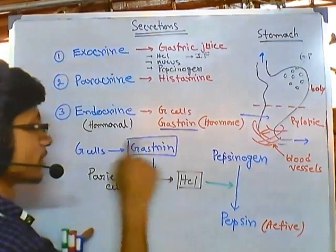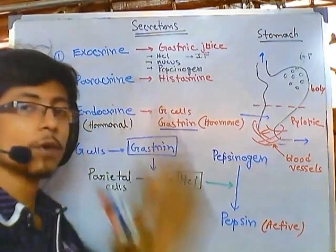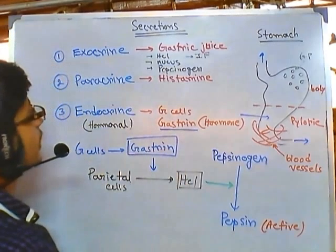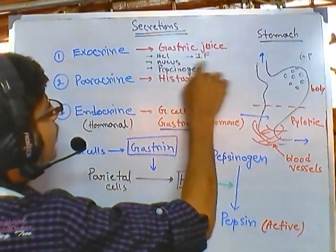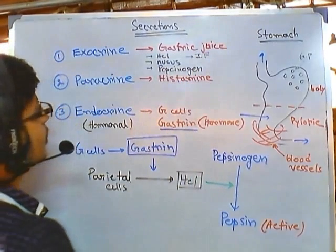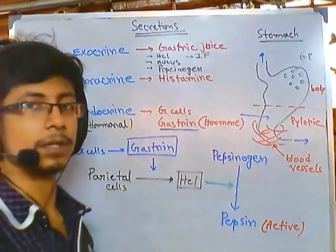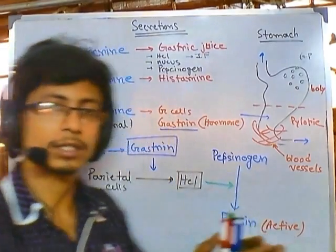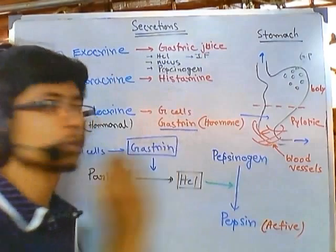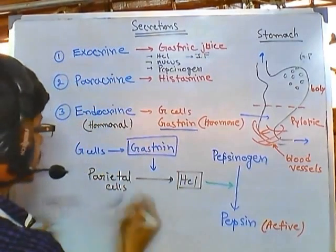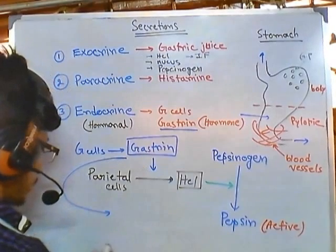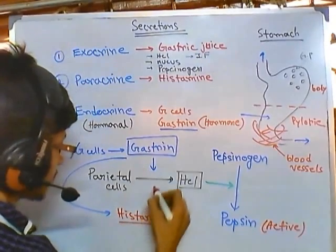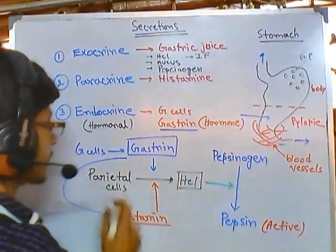The process of secretion of HCl and pepsinogen is regulated by gastrin, because gastrin is the master controller — the inducer of all these events. Gastrin also stimulates the secretion of intrinsic factor, as well as histamine from paracrine cells. As histamine is produced, more and more histamine is made, and histamine also works on parietal cells to secrete HCl.